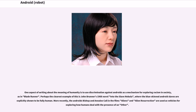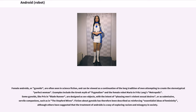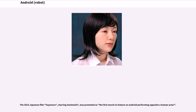More recently, the androids Bishop and Call in the films Aliens and Alien Resurrection are used as vehicles for exploring how humans deal with the presence of another. Female androids, or gynoids, are often seen in science fiction and can be viewed as a continuation of the long tradition of men attempting to create the stereotypical perfect woman. Examples include the Greek myth of Pygmalion and the female robot Maria in Fritz Lang's Metropolis. Some gynoids, like Pris in Blade Runner, are designed as sex objects or as submissive, servile companions, such as in The Stepford Wives. Fiction about gynoids has been described as reinforcing essentialist ideas of femininity, although others suggest it is a way of exploring racism and misogyny in society. The 2015 Japanese film Sayonara, starring Geminoid F, was promoted as the first movie to feature an android performing opposite a human actor.